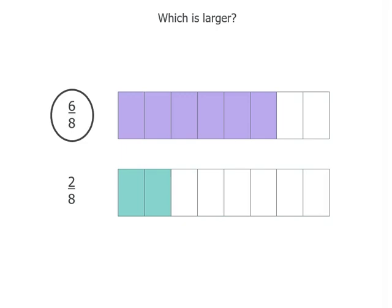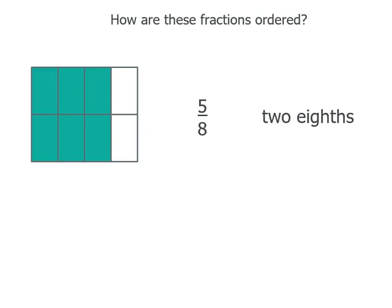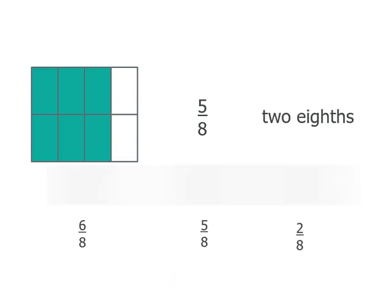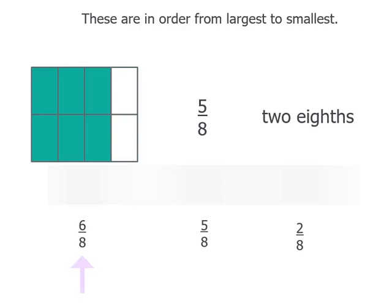6 eighths is a lot more than 2 eighths and it's much closer to a whole. But what if they look different? What if we need to compare 3 fractions? One is a picture showing 6 out of 8 equal pieces, the symbols show 5 of 8 equal pieces, and the words show 2 of 8 equal pieces. They all have the same denominator of 8 — so we've got 6 eighths, 5 eighths, and 2 eighths. Writing them all as symbols, we can see they're in order from largest to smallest: 6 eighths is bigger than 5 eighths, which is bigger than 2 eighths.